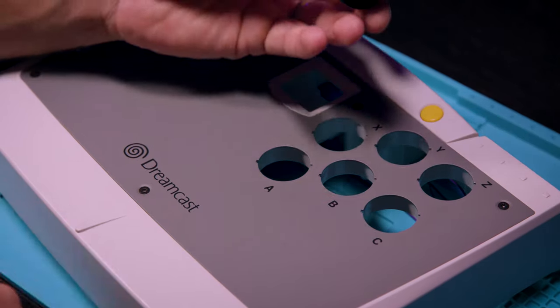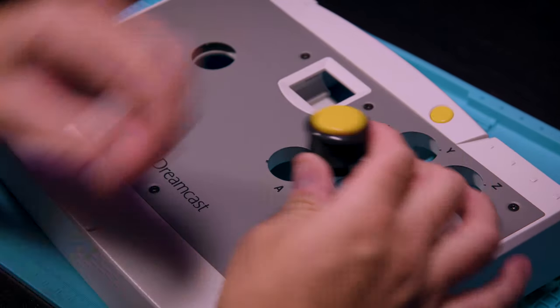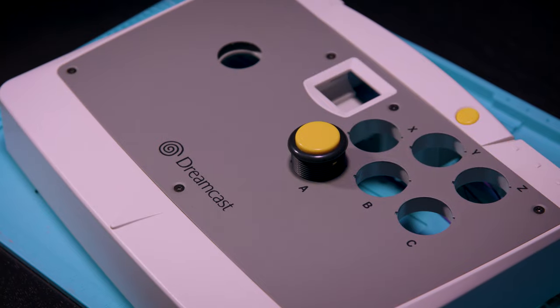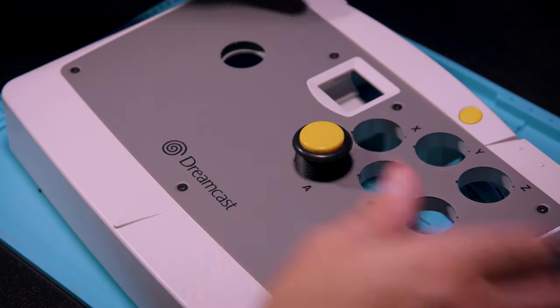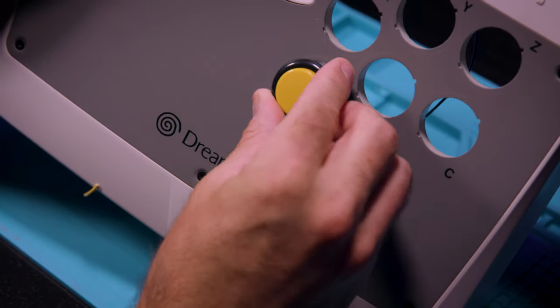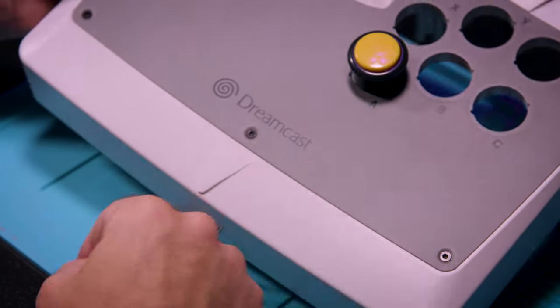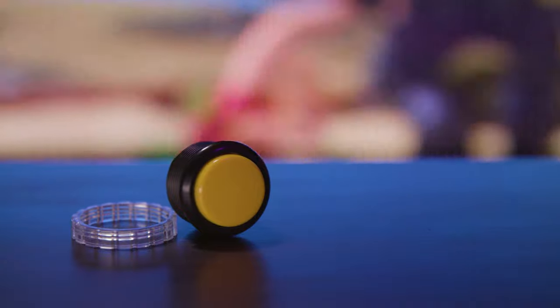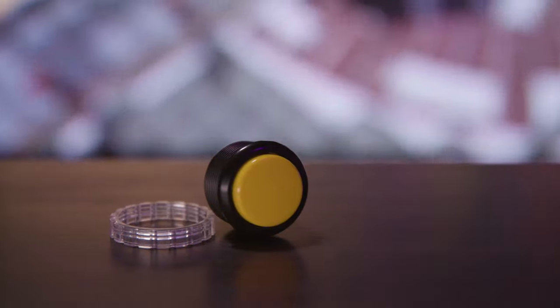The big problem with this stick and many other Sega sticks is that standard 30mm buttons will not fit. They're about 1-2mm off. So what we're going to need to do is widen these holes using a Dremel. We're going to be using some black and yellow screw-in Sumitsu buttons.